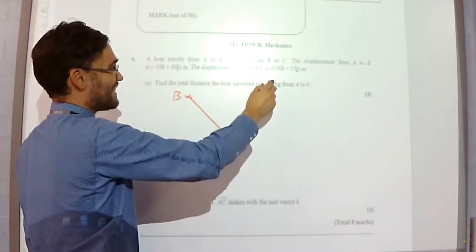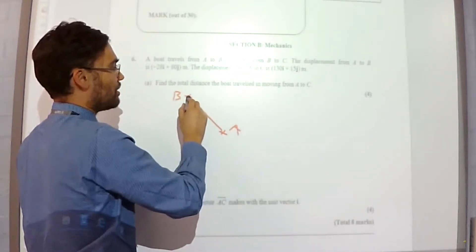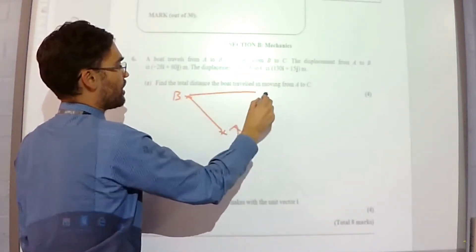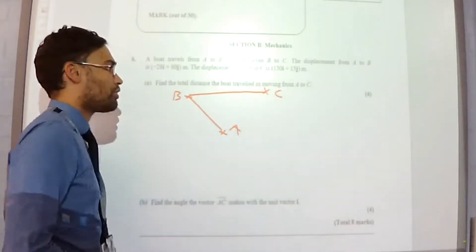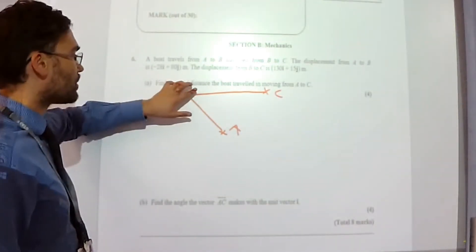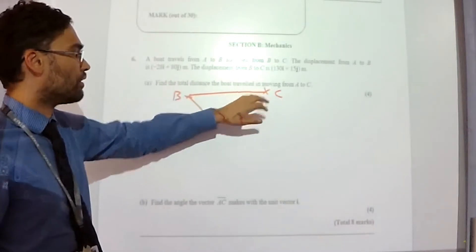Displacement from B to C is 130I plus 15J. So it's then going to go something like this, slightly upwards across to C. Find the total distance of the boat travel in moving from A to C.